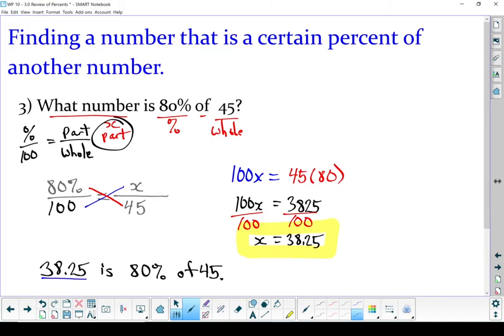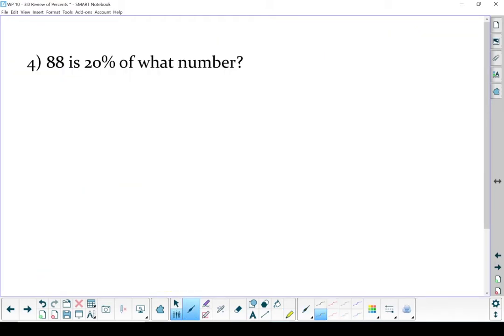This 38.25, that's my part. That's the part we figured out. One more example. Start with a formula, as always. Percent over 100 equals part over whole. Let's label the pieces of the question.